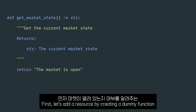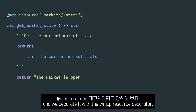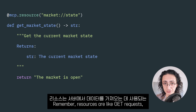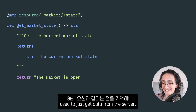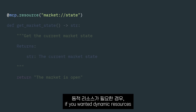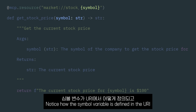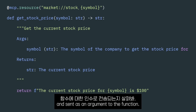First, let's add a resource by creating a dummy function that will tell us if the market is open or not, and we decorate it with the MCP resource decorator. Remember, resources are like GET requests, used to get data from the server. Resources are identified by a URI scheme — in this case, market://state. If you wanted dynamic resources, you could use variables in the URI scheme. Notice how the symbol variable is defined in the URI and sent as an argument to the function.